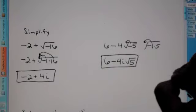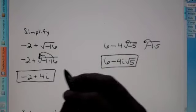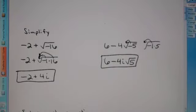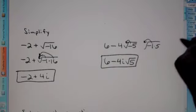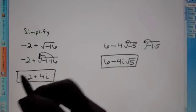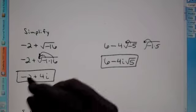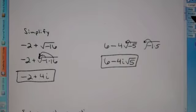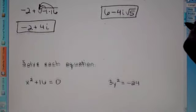We've done problems exactly like this before. The new thing is that we have a negative underneath the root, which means you pull it out and make it an i.